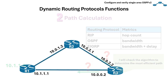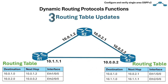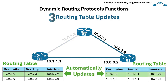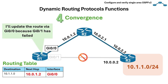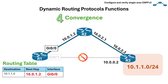Next is Routing Table Updates. Routers maintain routing tables that store information about the best paths to different networks. Dynamic protocols automatically update these tables when network conditions change. Next is Convergence. When a network change occurs, like a link failure, dynamic routing protocols initiate a convergence process to recalculate routes and update routing tables, ensuring traffic continues to flow efficiently.